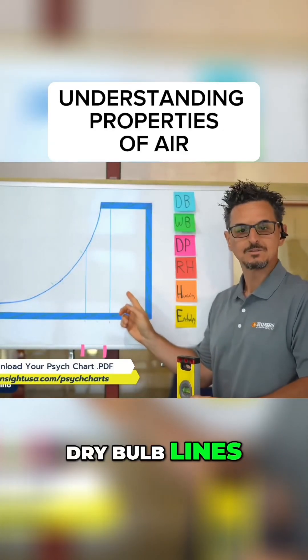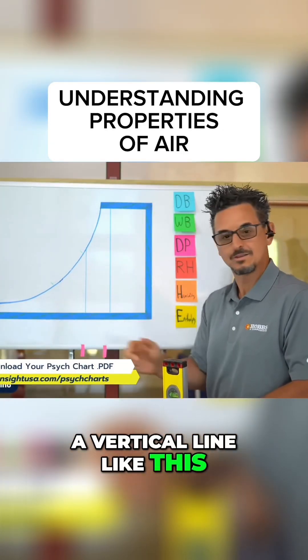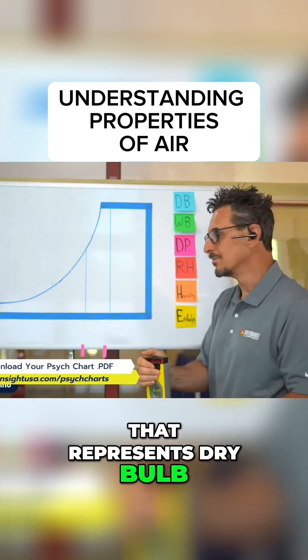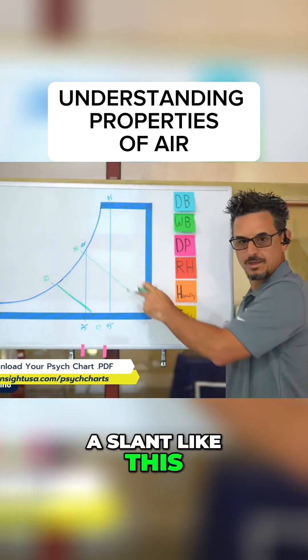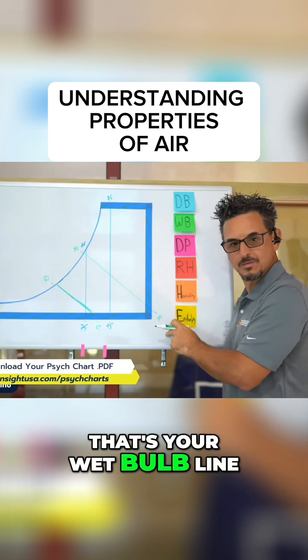So those are two dry bulb lines. Every time you see a vertical line like this, that represents dry bulb. So whenever you see a slant like this, that's your wet bulb line.